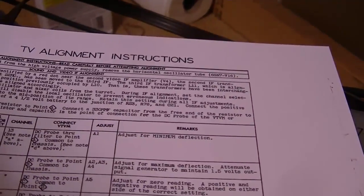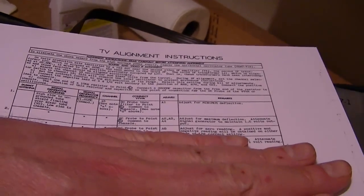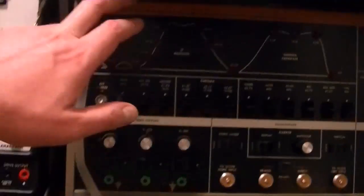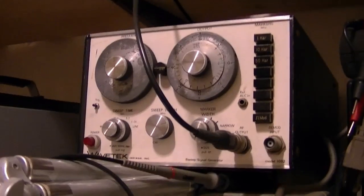So I need to adjust A1, A2, A3, A4 and A5. And I'll check the S curve. I'll use this Wave Tech model 1002 sweep generator.